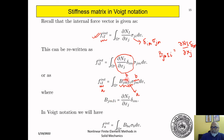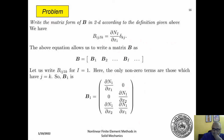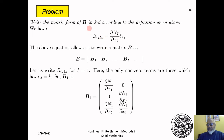So B becomes a matrix, sigma is a vector, and this is how you write it in Voigt notation — and how you code it in your finite element program. Now let's do an example. Suppose I have defined the quantity b_{ij,Ik} as given. How would I write it in matrix form?